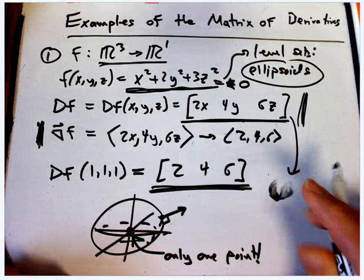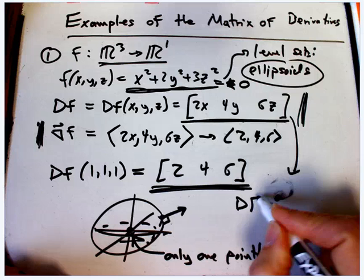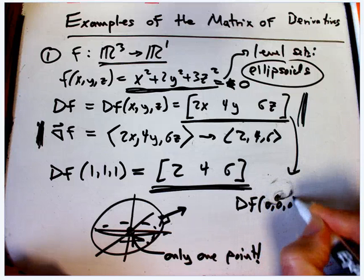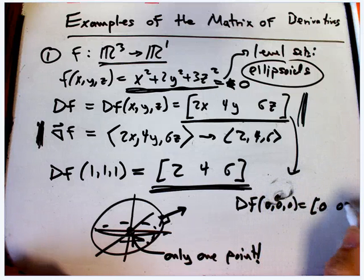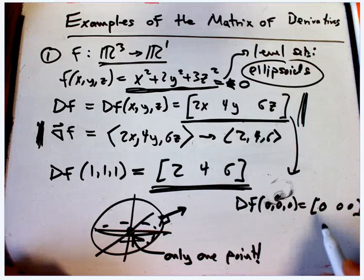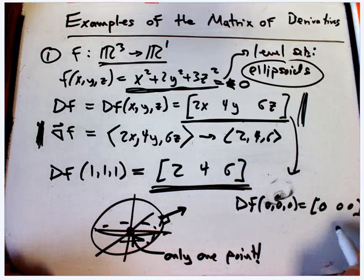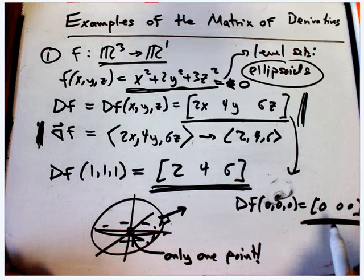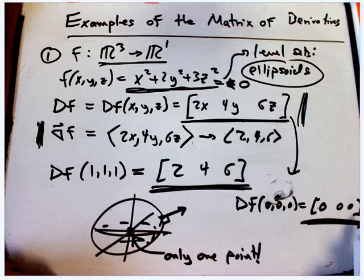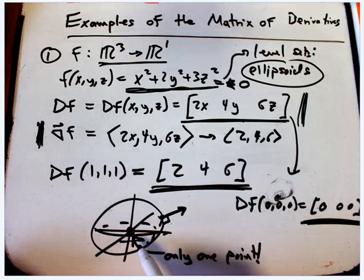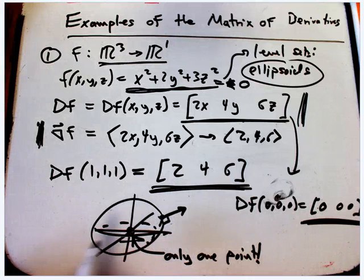Where df at (0,0,0), of course, is the 0 matrix. Now, the gradient vector also would have told us that this is very special to be the 0 vector. But this is a hint as to, oh, we might want to look at special things about a matrix, about the derivative matrix, to figure out maybe there's something special going on with the function or its level sets or other things about the function.